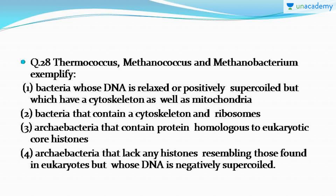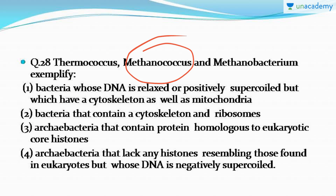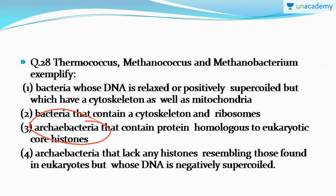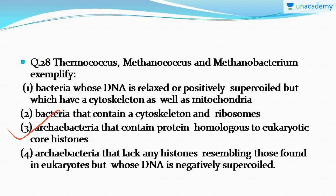The next question: Thermococcus, Methanococcus, and Methanobacterium exemplify which type of bacteria? It's a bit confusing — you might get confused between option three and option four — but the correct answer is option number three. Thermococcus, Methanococcus, and Methanobacterium are a type of archaebacteria, and since they are the most advanced type, they contain proteins homologous to eukaryotic histone proteins.